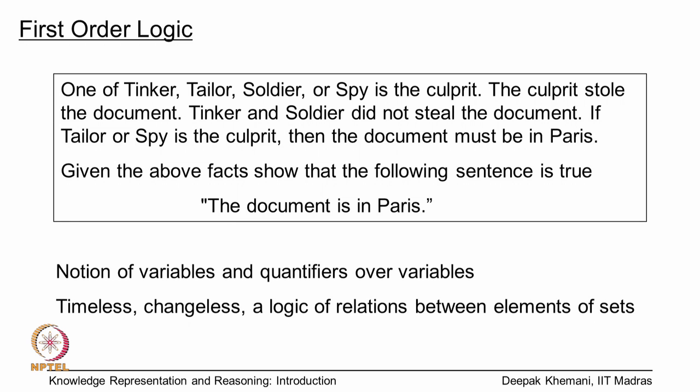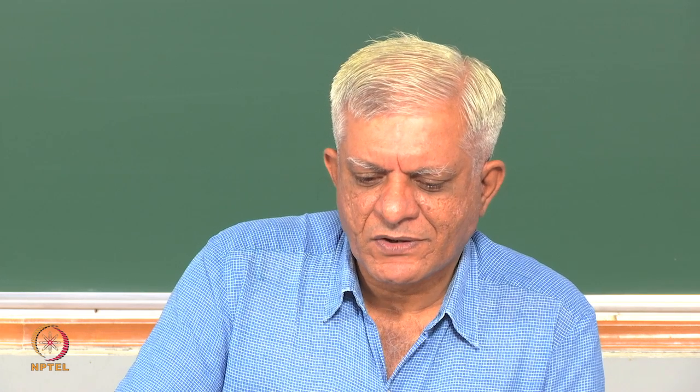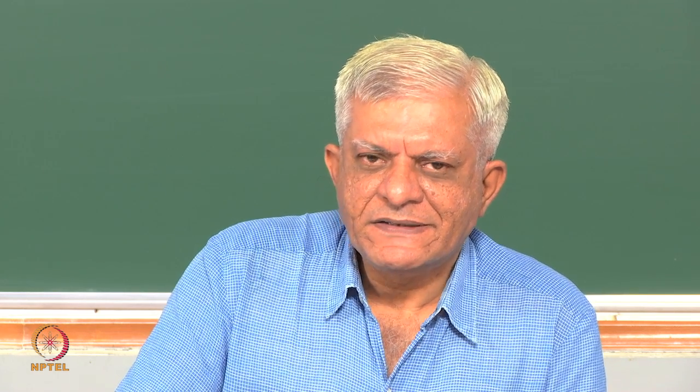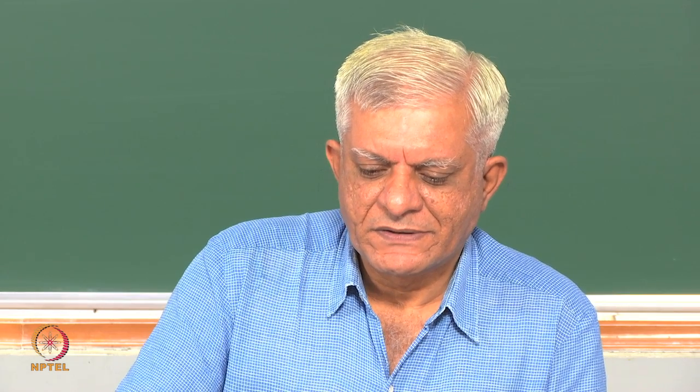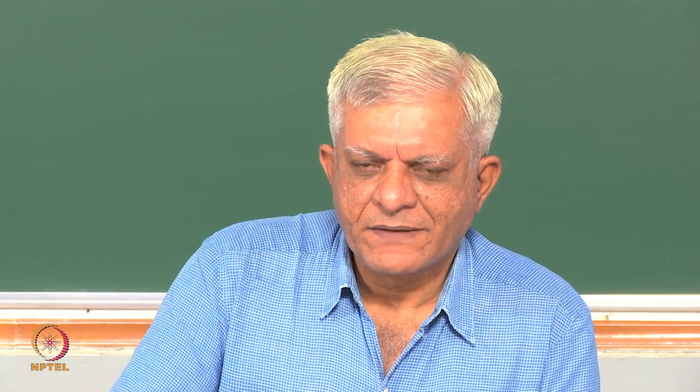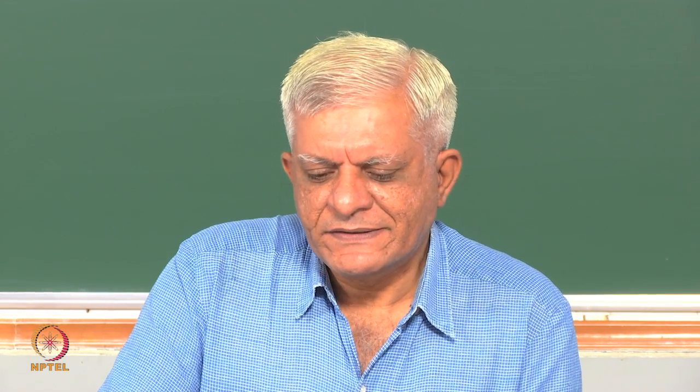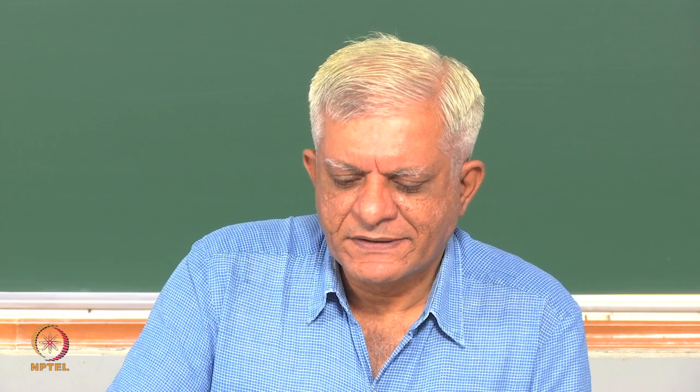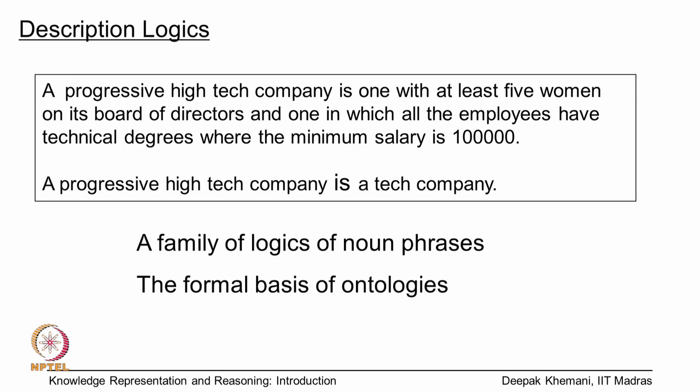We need richer languages to talk about real world situations. We need the notion of variables and quantifiers over variables. We need to make statements like: one of Tinker, Taylor, Soldier, Spy is a culprit; the culprit stole the document — so we are saying there exists somebody who stole the document. To reason with statements like this, we need first-order logic, and then we can make inferences about what really happens and what you can conclude.